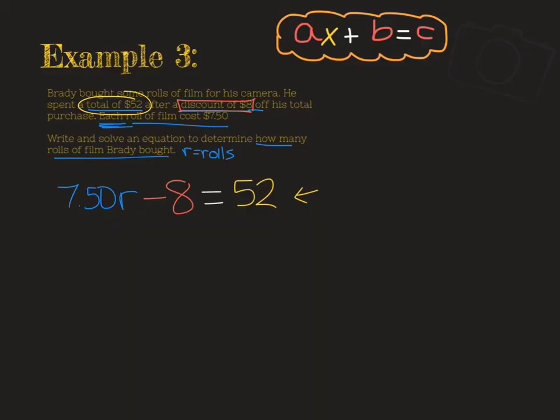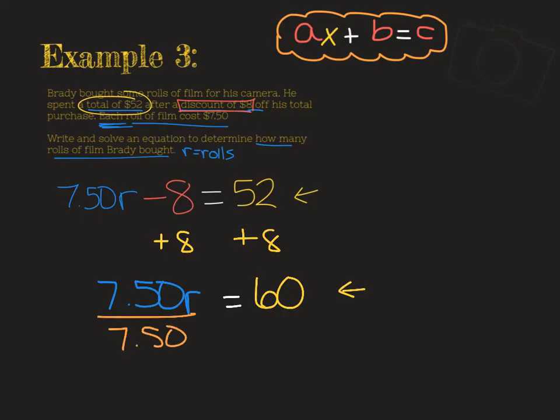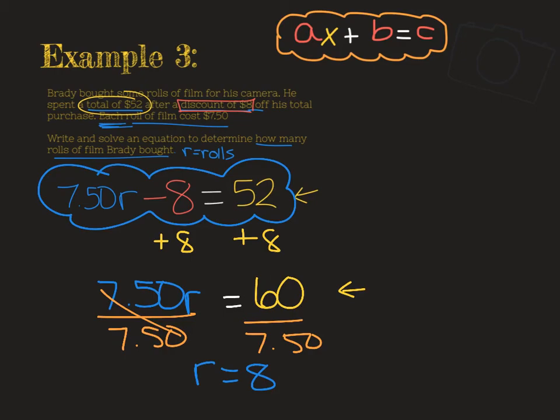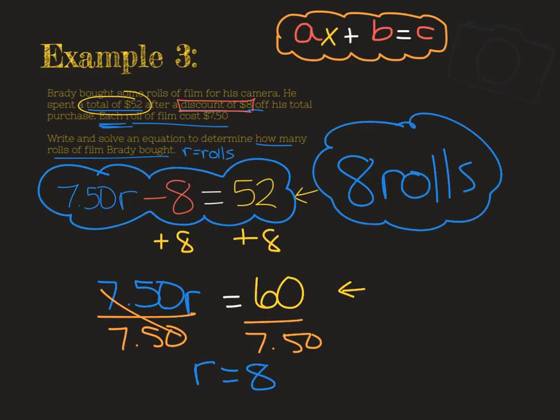So now to go ahead and solve this equation to see how many Brady bought, I have to add eight to both sides of this equation. And I'm going to find out that $7.50 times r equals 60. So what that means is before that discount, it would have cost him $60, but that was before his discount. Then we divide by the cost per roll to figure out that he had eight rolls of film. Sorry, we know the cost. This is how many rolls of film he had. So here's our equation. And then our answer is Brady bought eight rolls of film for $52.